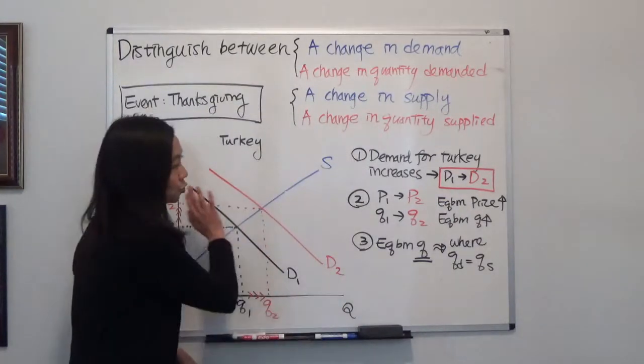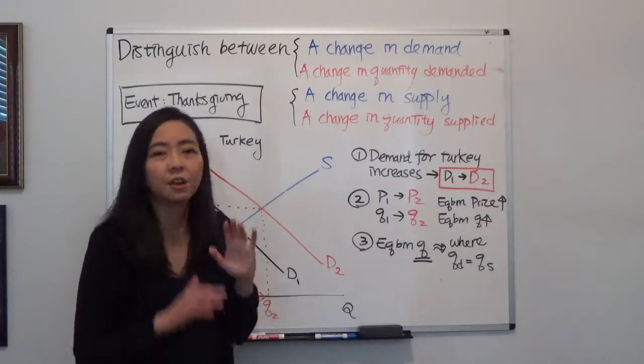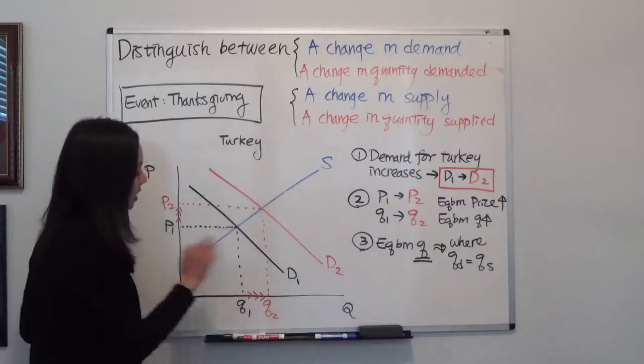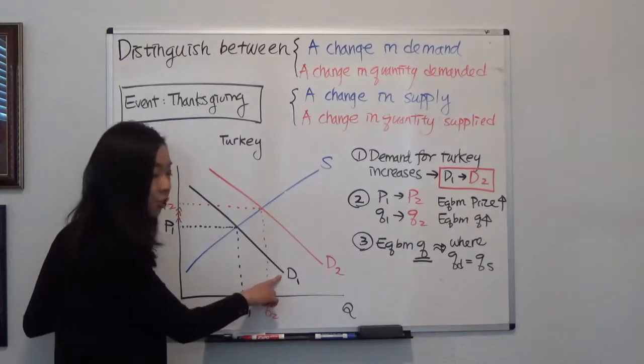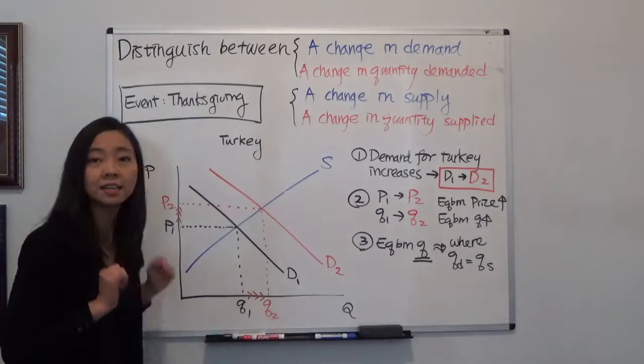And therefore you should not see a shift in the supply curve. So what would happen? First thing first, we're going to see that our demand is going to shift from D1 to D2. And as a result,